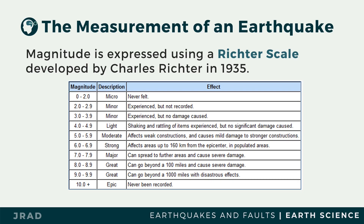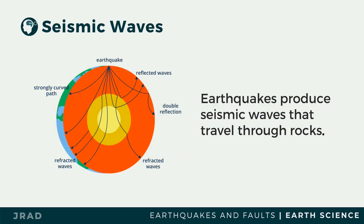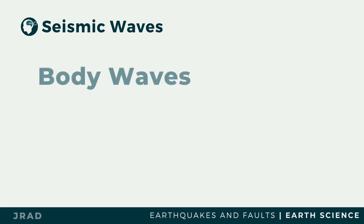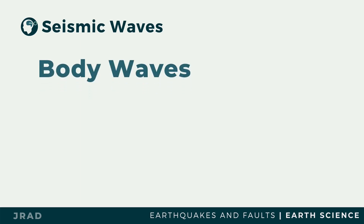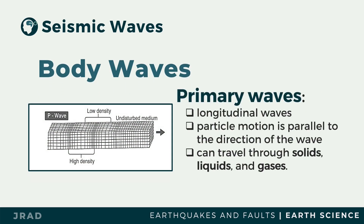Earthquakes produce seismic waves — vibrations of the Earth caused by the sudden release of energy stored in rocks that have been deformed by forces originating from moving tectonic plates. Seismic waves can travel through rocks, and their paths can be used to determine the medium through which they travel. The two types of seismic waves are body waves and surface waves. Body waves refer to vibrations that travel through the interior of the Earth, and include primary waves (P waves) and secondary waves (S waves).